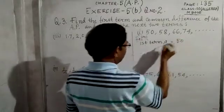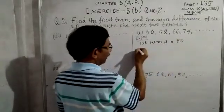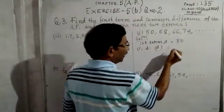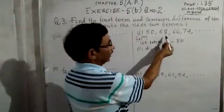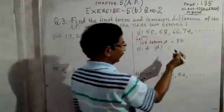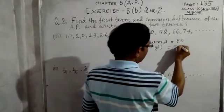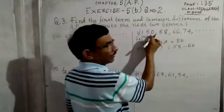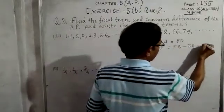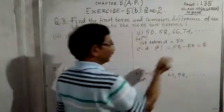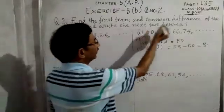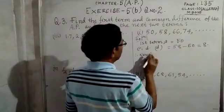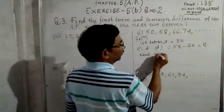The common difference is shown by the letter D. D equals the second term minus the first term, so 58 minus 50, which is 8. This is our common difference. Now we write the next two terms.